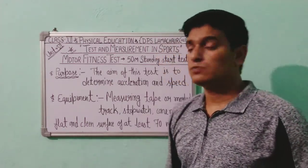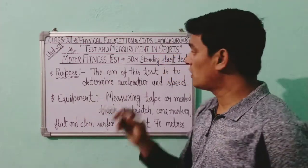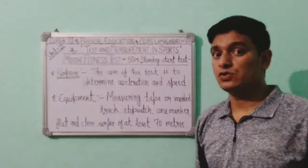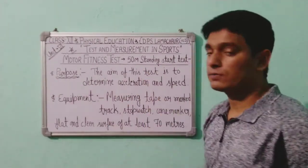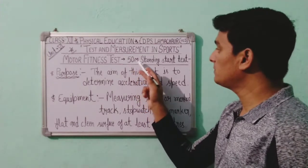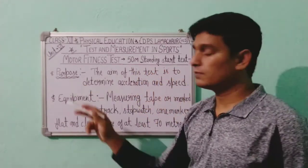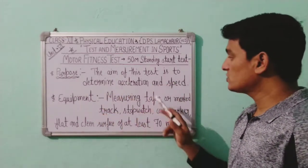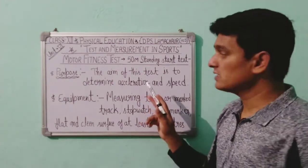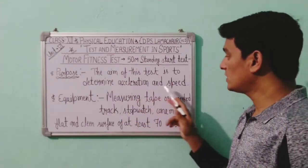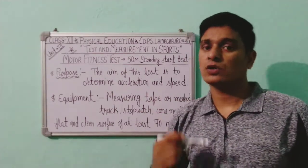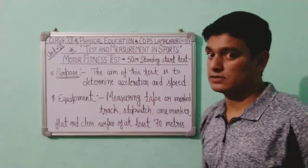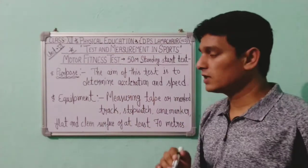Our first test is the 50 Meter Standing Start Test. The purpose of this test is to determine the acceleration and speed of a subject — a sports person or a student. This is the purpose, and questions can be asked about it.